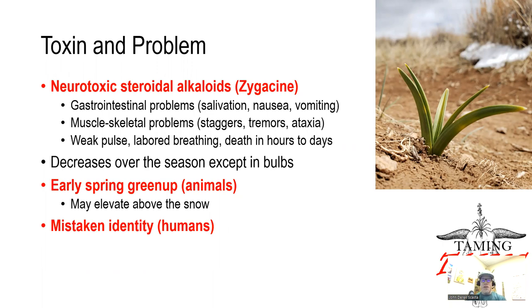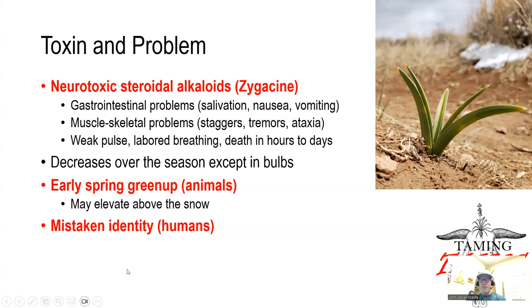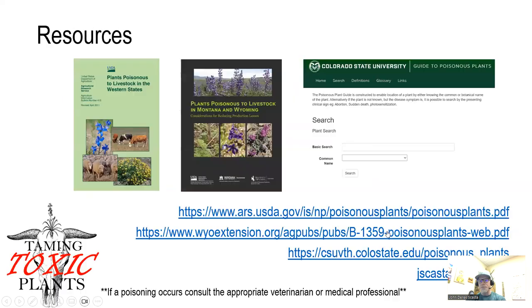The toxins decrease over the season, except in the bulbs where they remain elevated. The big problem for animals is that death camas is often the first thing to green up in the spring. And in humans, it can be mistaken for a wild onion when foraging.